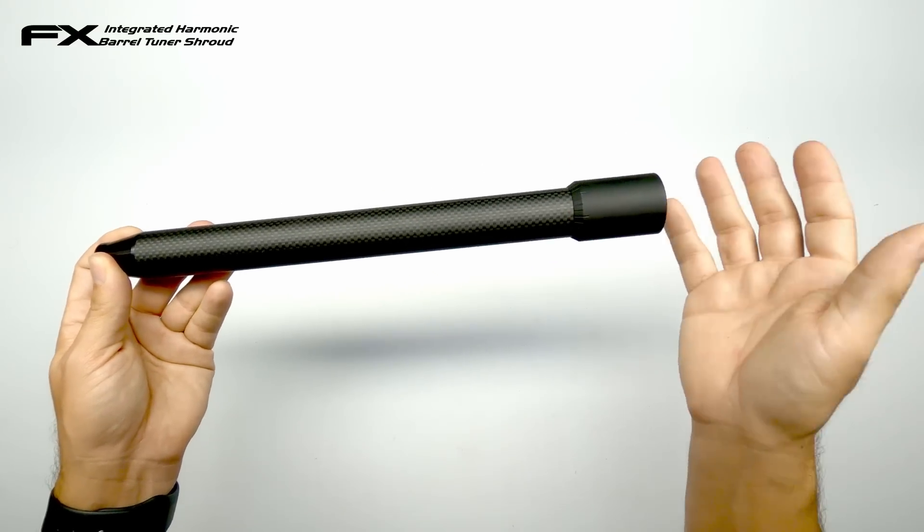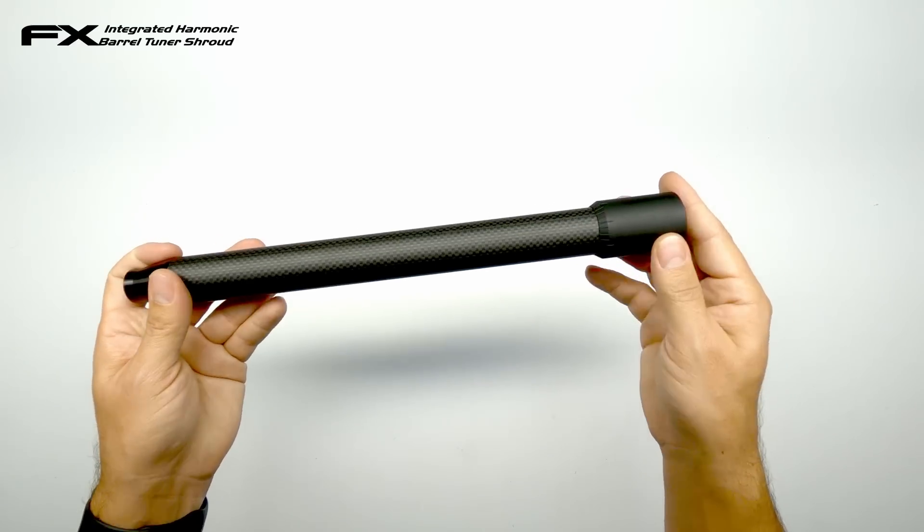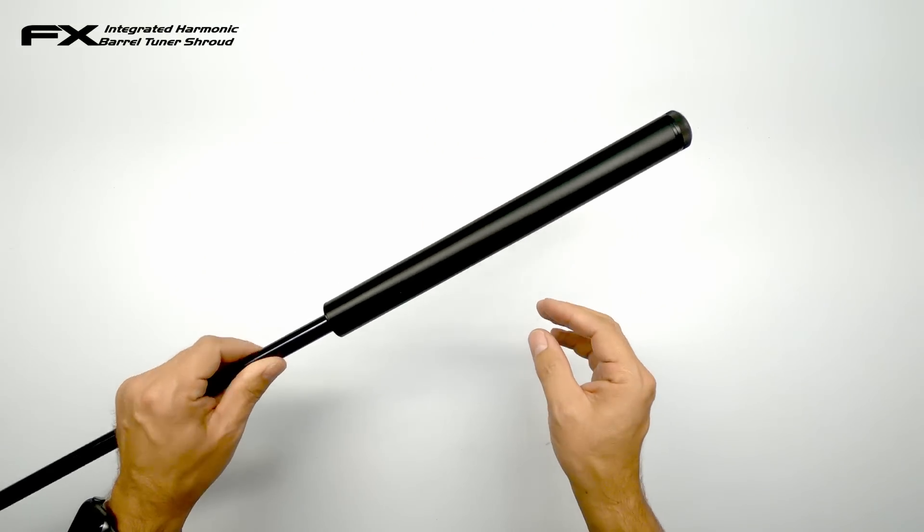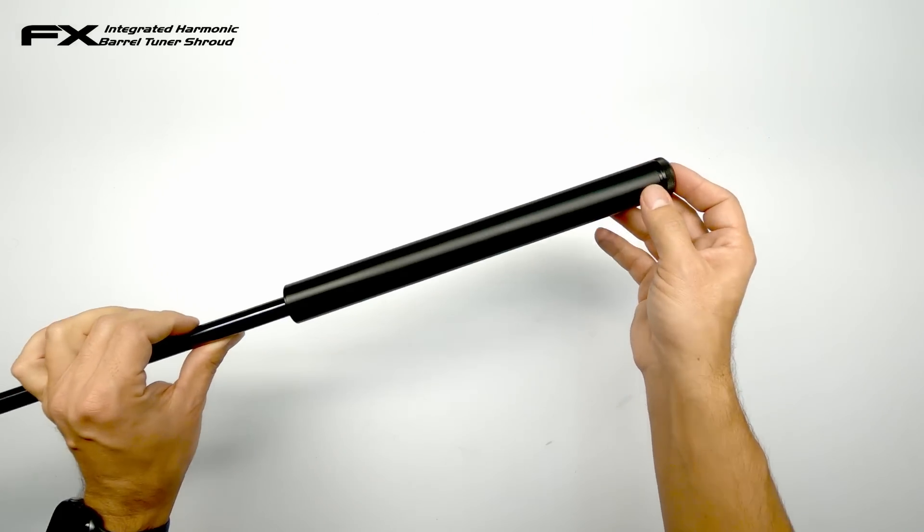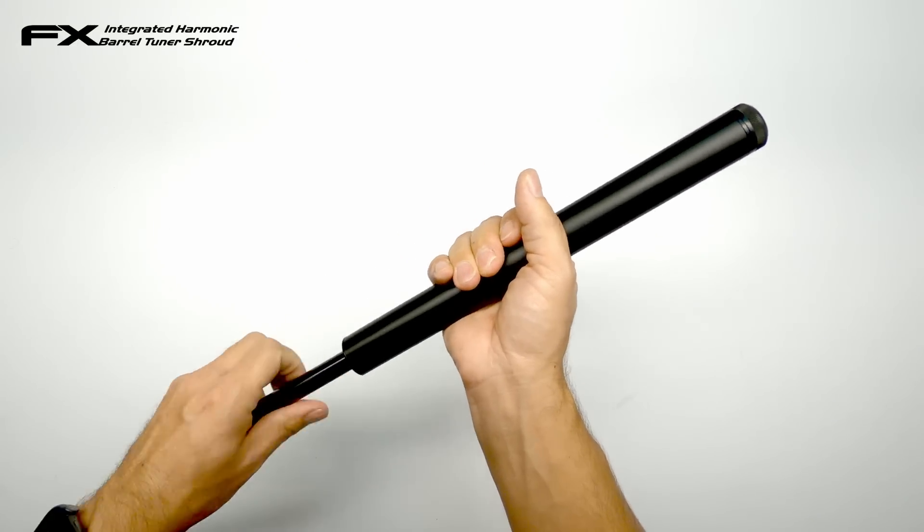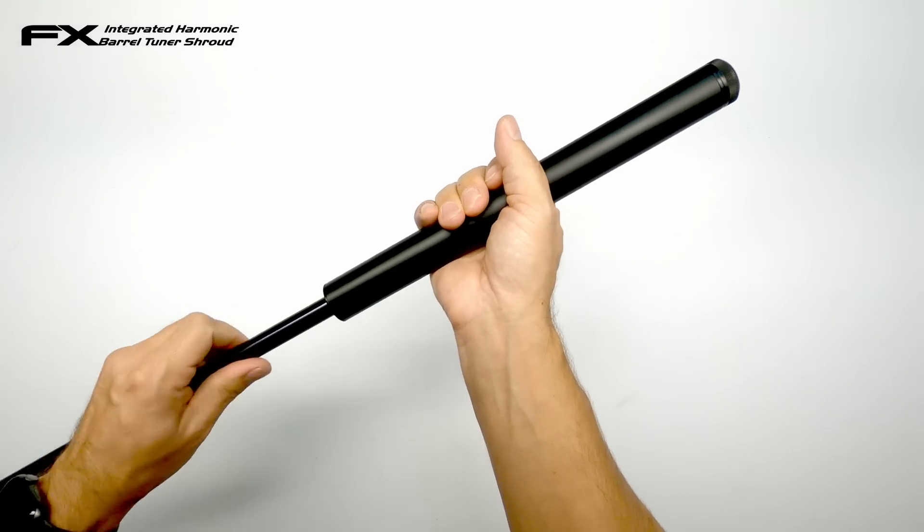So installing this is very simple and it takes only a few minutes and there are no tools required. So let's get it installed on my M3. So here I have my 22 caliber barrel from my FX impact M3. I took it already out of the M3 as it's easier on video and better for the good graces of YouTube as they don't like to see disassembly of guns.